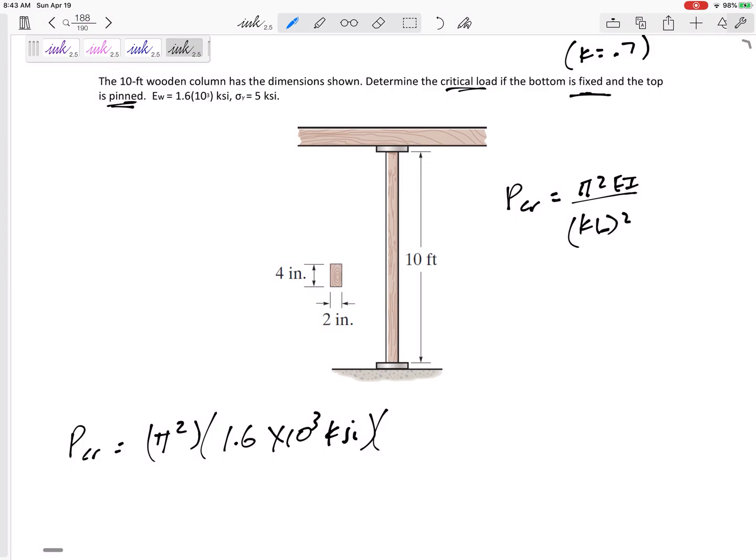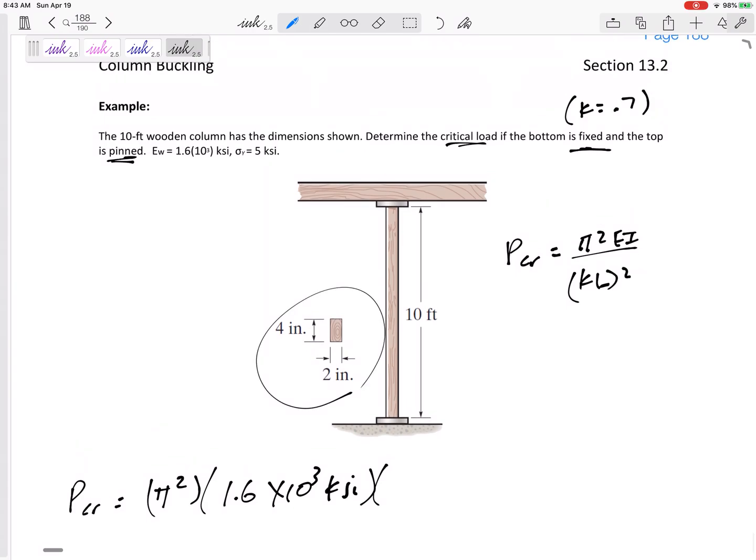The I, well, we were given the cross-section, so we can find the I. The I X is 1/12th BH cubed. So this would be 1/12th times 2 times 4 cubed. This would be 10.07 inches to the 4th.